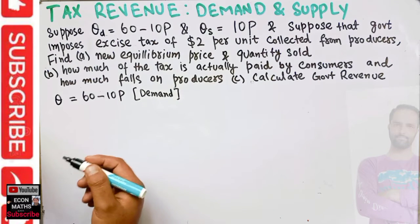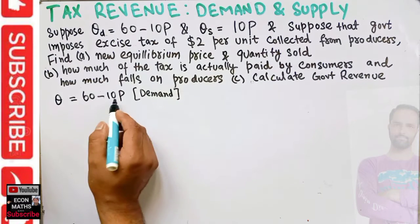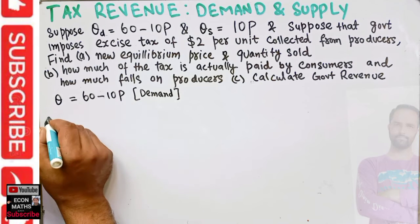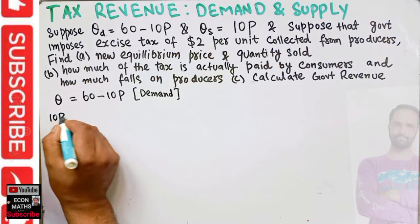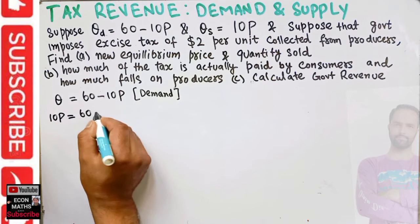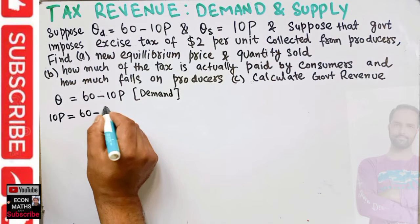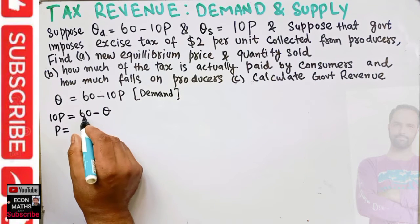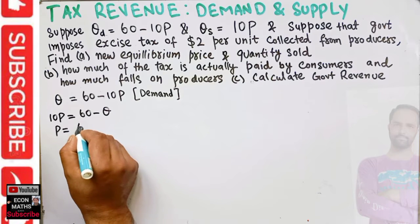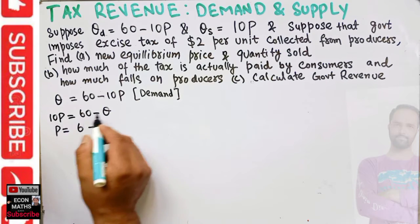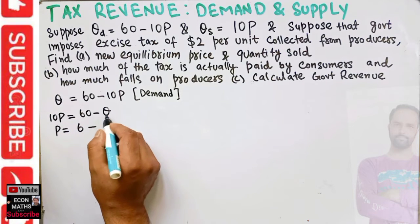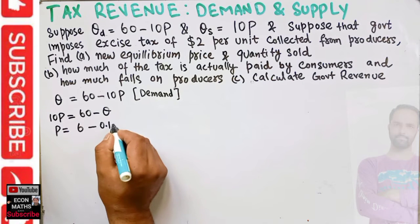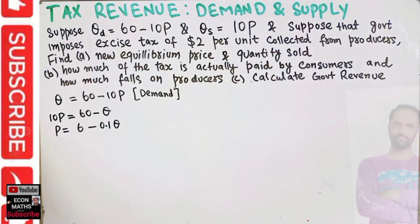Let's write the demand function in terms of the inverse demand function. Transposing, we get 10p equal to 60 minus q, or p is equal to — dividing each term by 10 — 6 minus 0.1q. This is our inverse demand function.